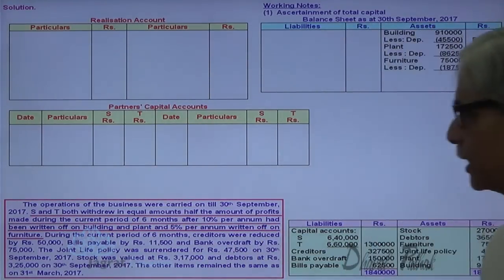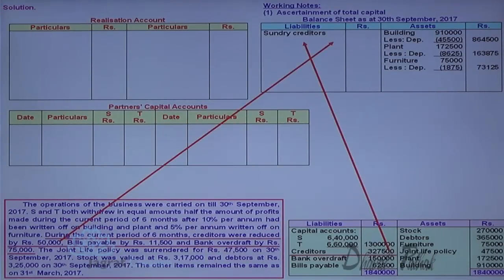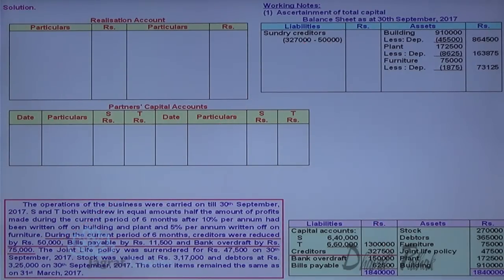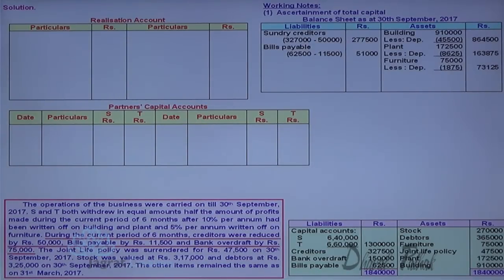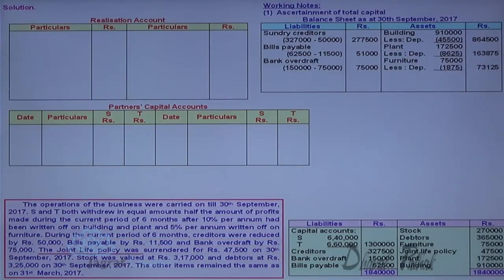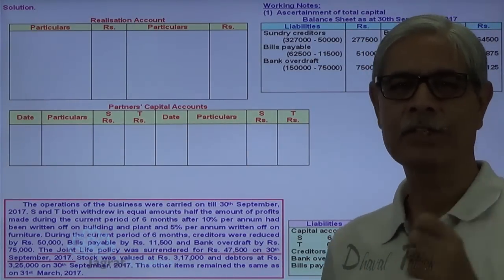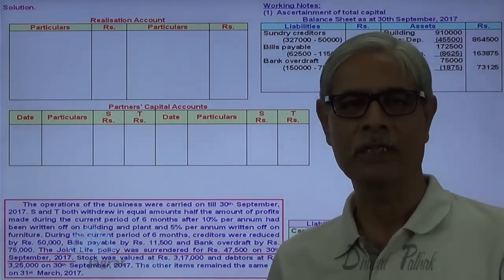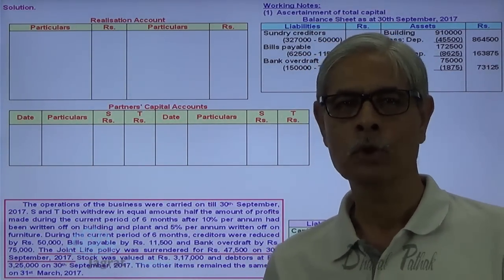During the current period of 6 months, creditors reduced by 50,000. So creditors as on 30th September 2017 are 3,27,500 minus 50,000 = 2,77,500. Bills payable reduced by 11,500: 62,500 minus 11,500 = 51,000. Bank overdraft reduced by 75,000: 1,50,000 minus 75,000 = 75,000 as on 30th September 2017. The joint life policy was surrendered, meaning it was cashed for 47,500, which must have been used to reduce the bank overdraft — no separate entry needed.